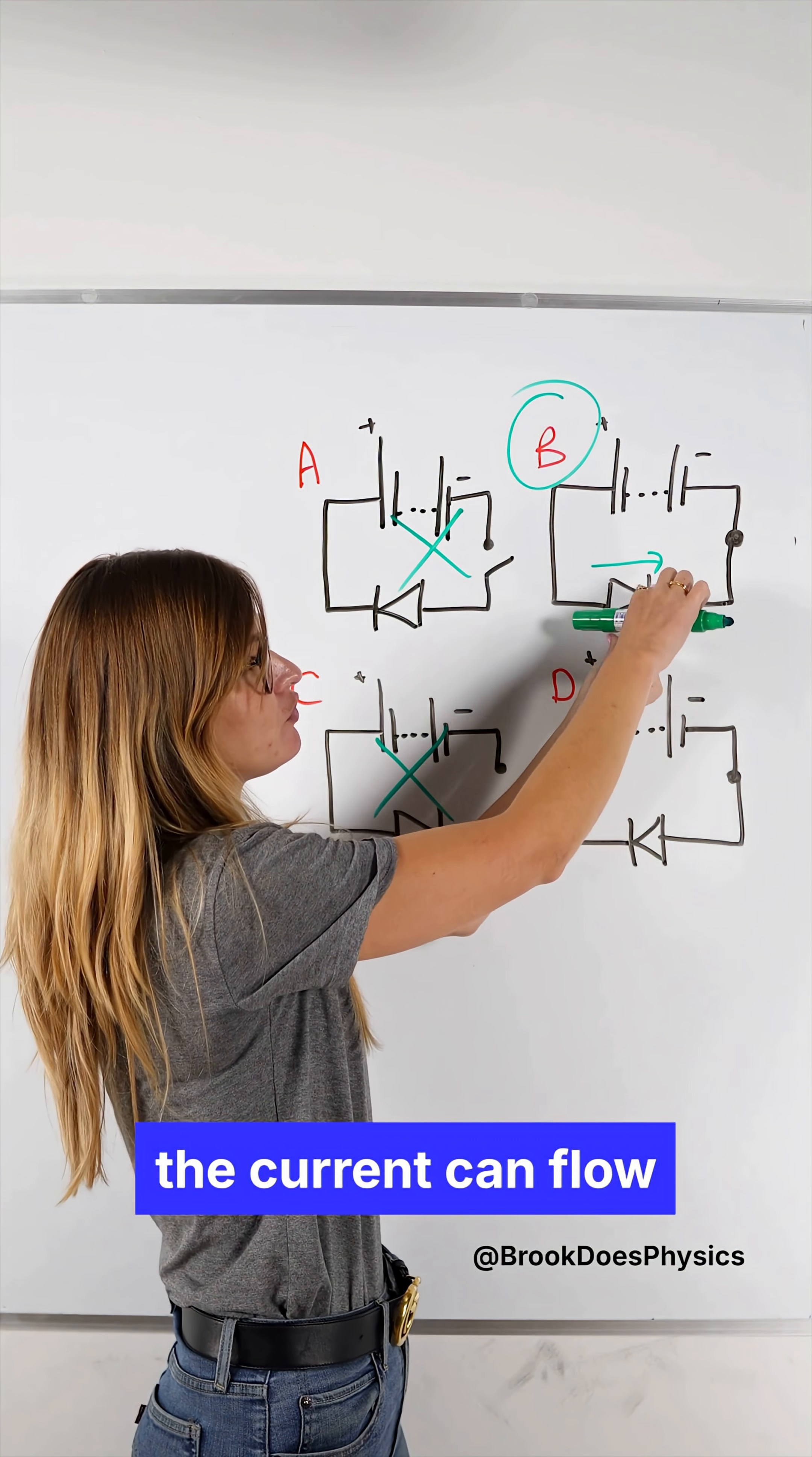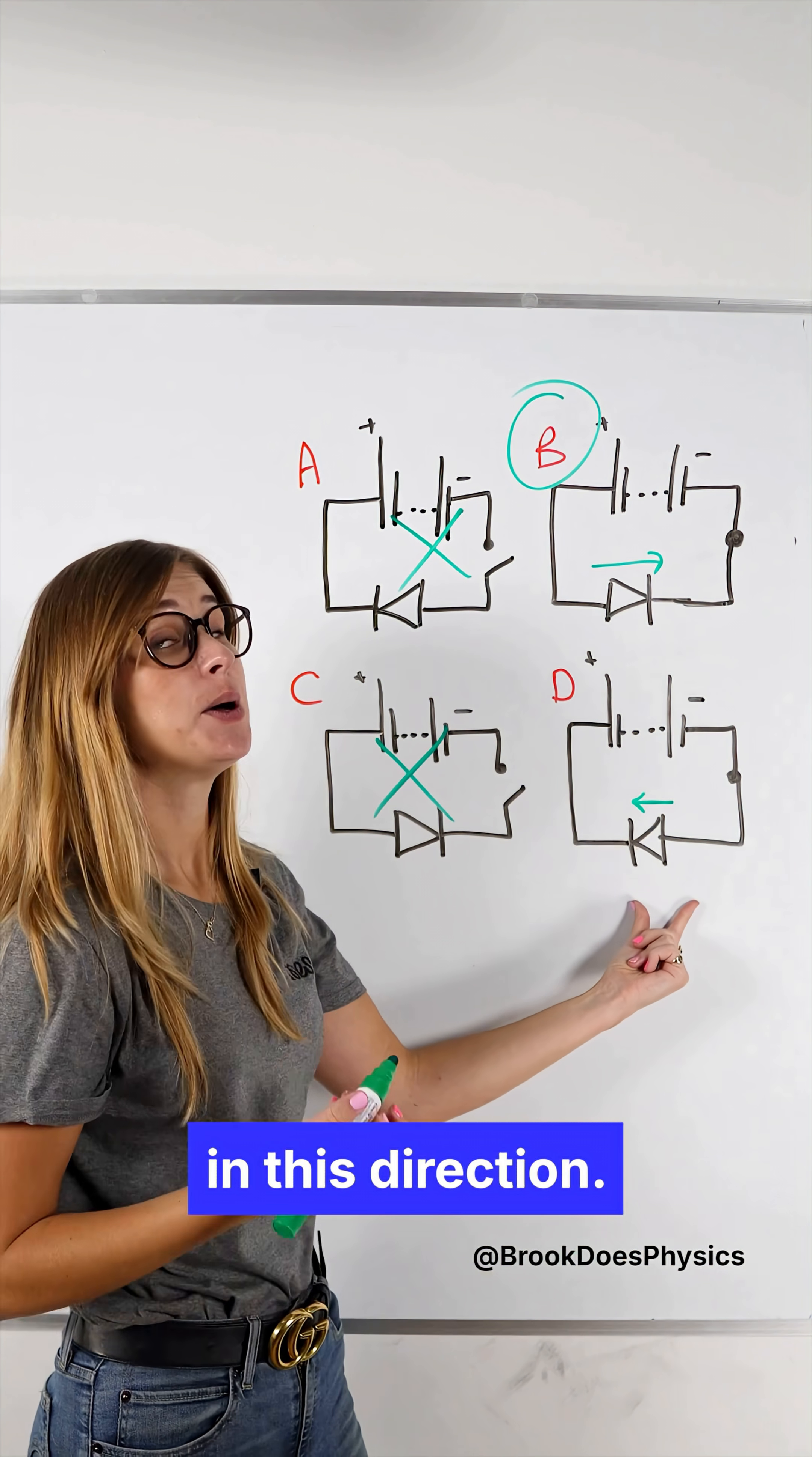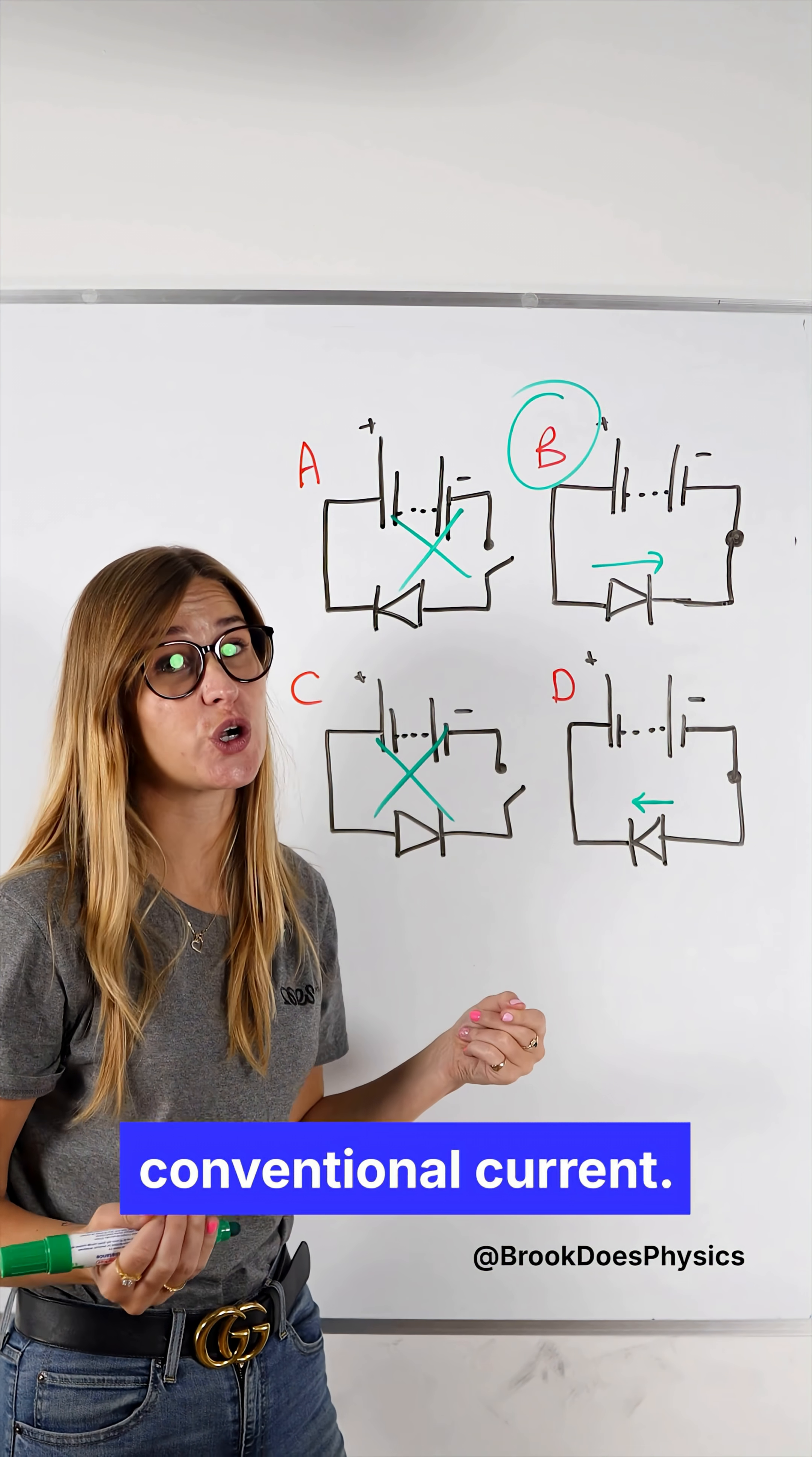So it shows me here the current can flow in this direction and it shows me here the current can flow in this direction but in circuits we have to do conventional current.